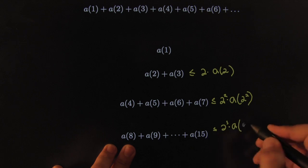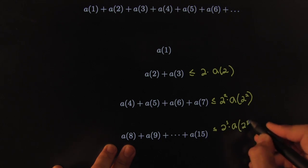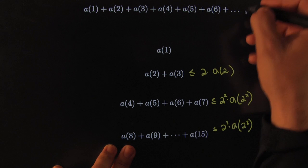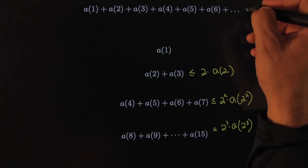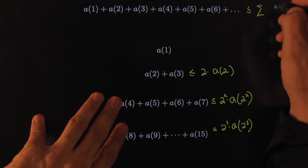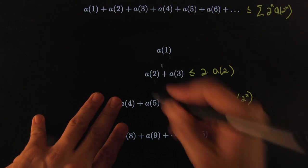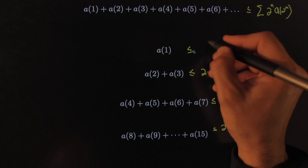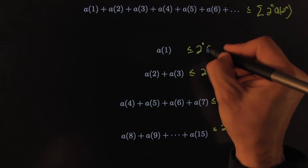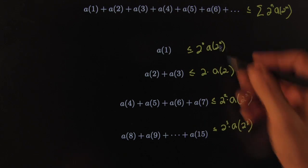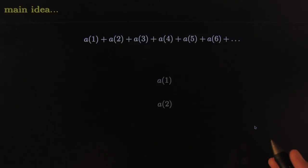And each one is no worse than a(2^3), than the first item. That bounds it on the right-hand side by summation of 2 to the n times a(2^n). This is a generic case. Of course, the first one I forgot: 2 to the 0 times a(2^0). It matches the pattern.